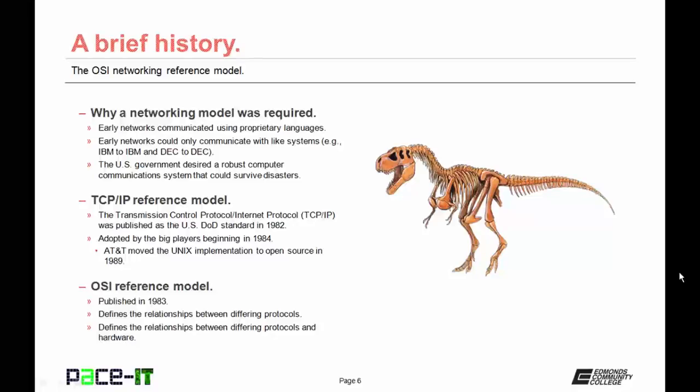The OSI reference model came later than the TCP-IP reference model. The OSI model was published in 1983, and it defines the relationships between differing protocols and hardware.